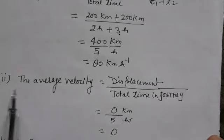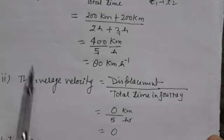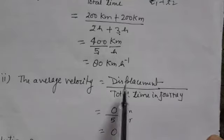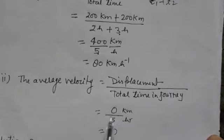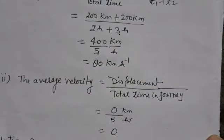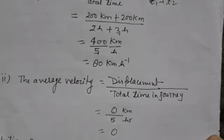The second part of question 7 asks for average velocity. Speed is a scalar quantity and velocity is a vector quantity. Average velocity uses displacement, not total distance. The displacement is the shortest distance between the initial and final position. Since the train returns to station A, the displacement is 0. Therefore, average velocity is 0.